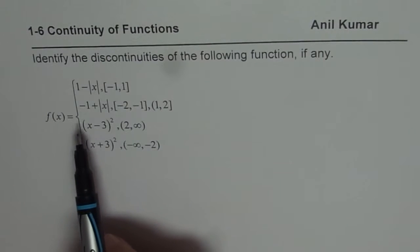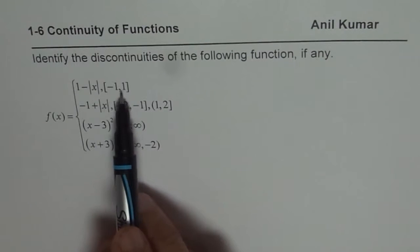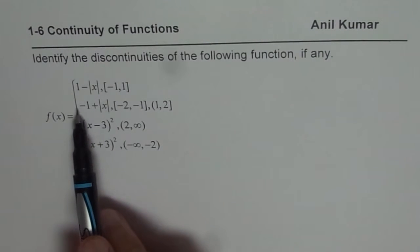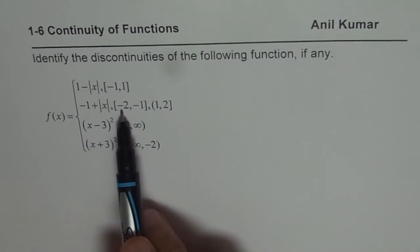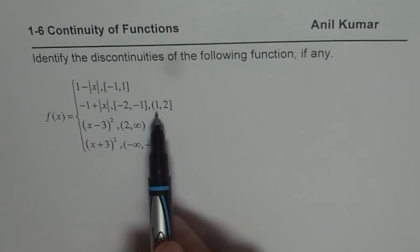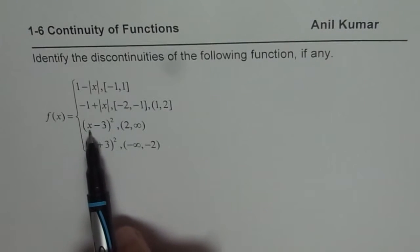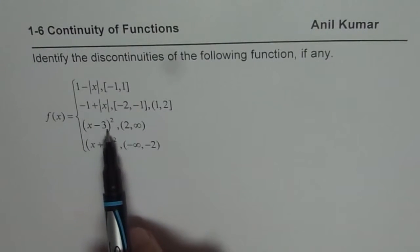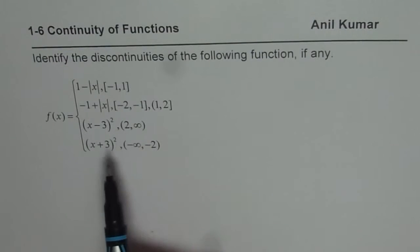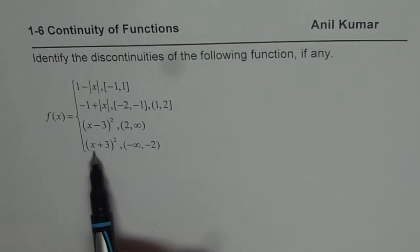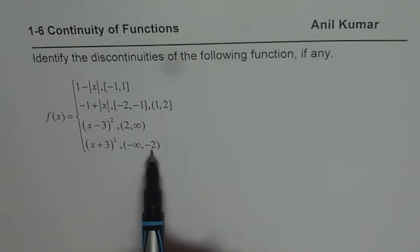f(x) equals 1 minus absolute value of x when x is between minus 1 and plus 1, both included. It equals minus 1 plus absolute value of x when x is between minus 2 and minus 1, both included, or greater than 1 and less than or equal to 2. It equals x minus 3 whole square when x is greater than 2, and x plus 3 whole square when x is less than minus 2.